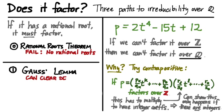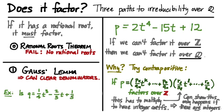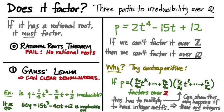So it tells us that irreducibility over the rationals is guaranteed if we have irreducibility over the integers. We use Gauss's Lemma as a simplifying technique to clear the denominators of a polynomial with rational coefficients, turning it into a polynomial with integer coefficients. For example, if I want to know if one-quarter t cubed minus two-thirds t plus one-fifth is irreducible over the rationals, I can answer that by clearing all the denominators first — multiplying by 60 — and checking irreducibility over the integers.